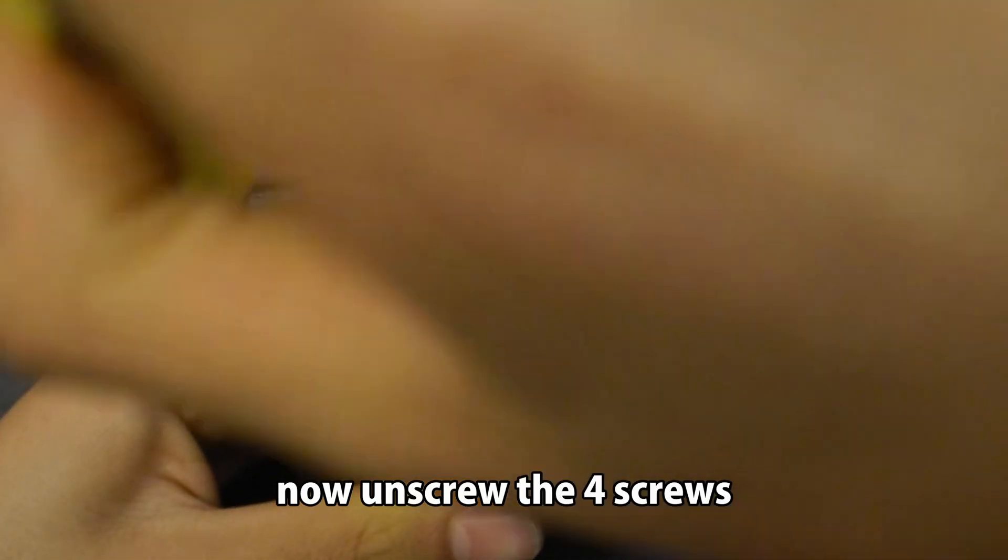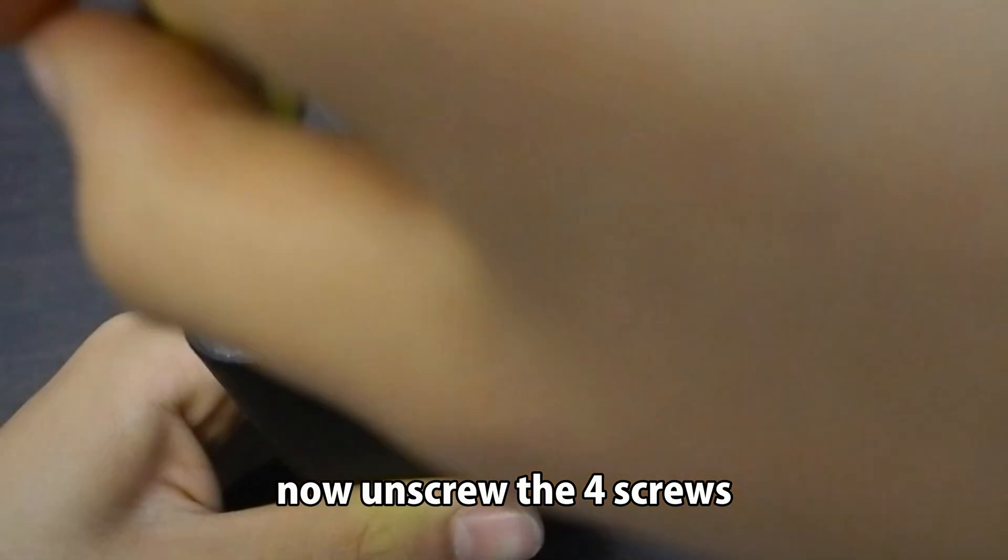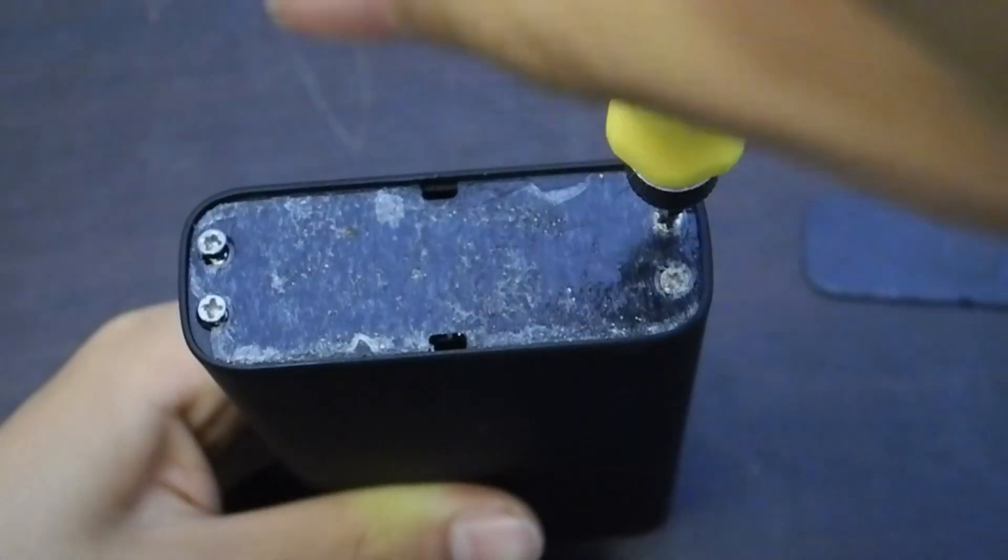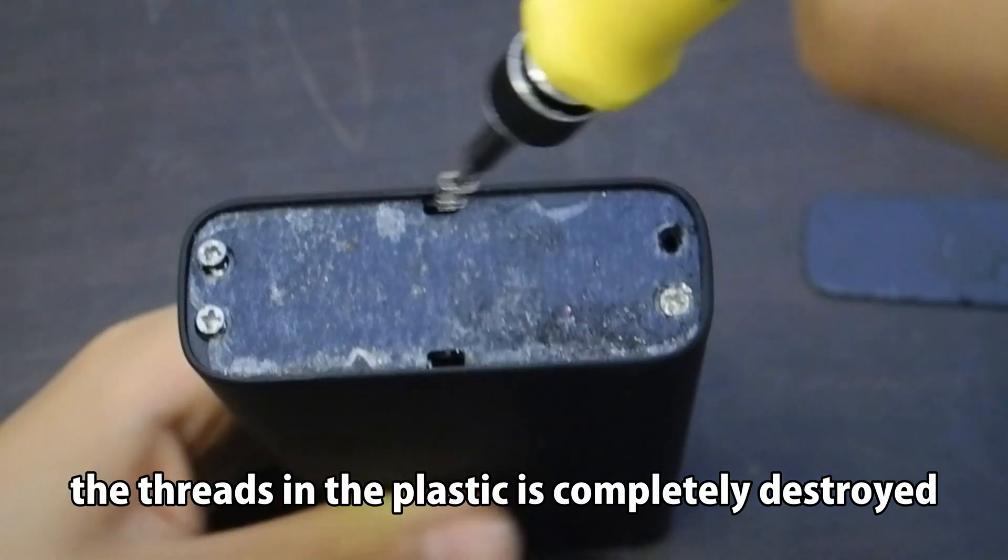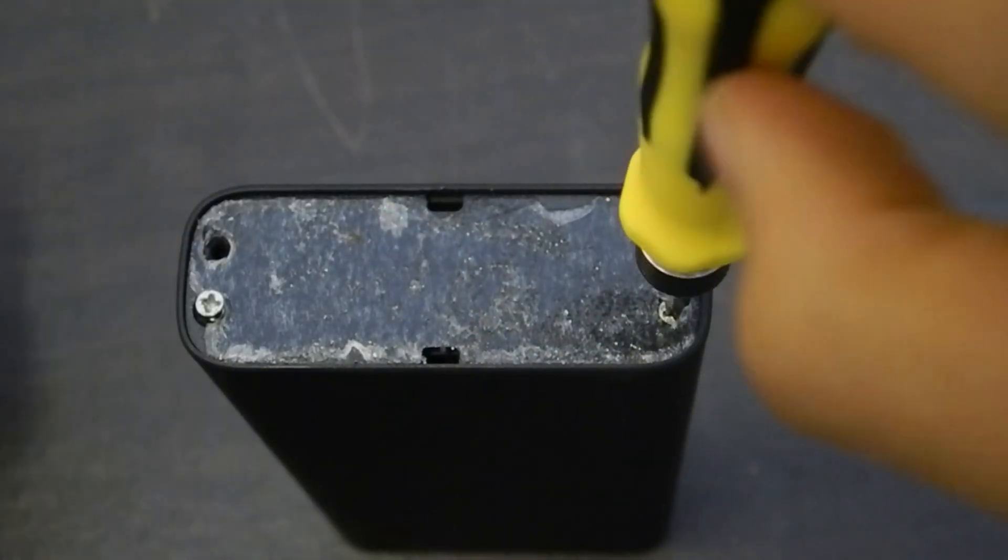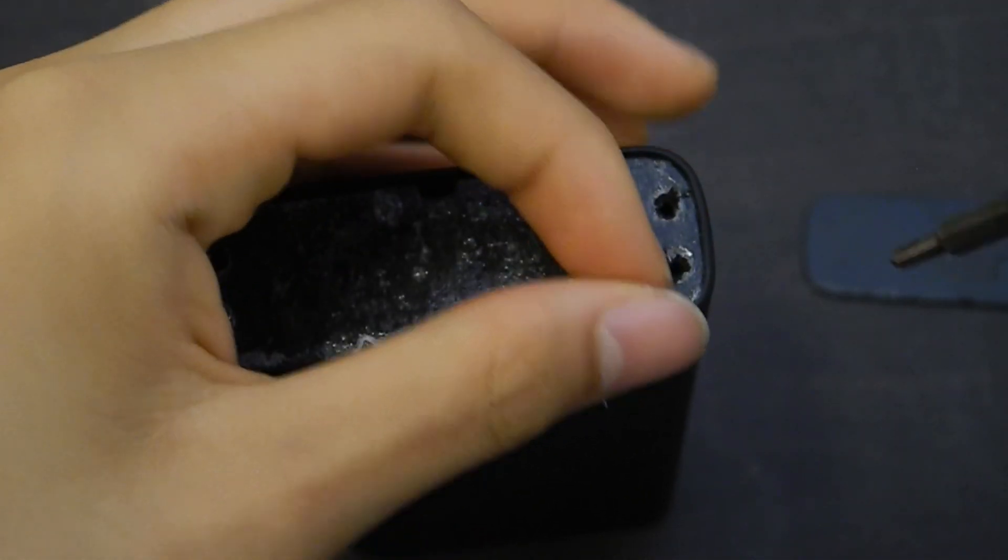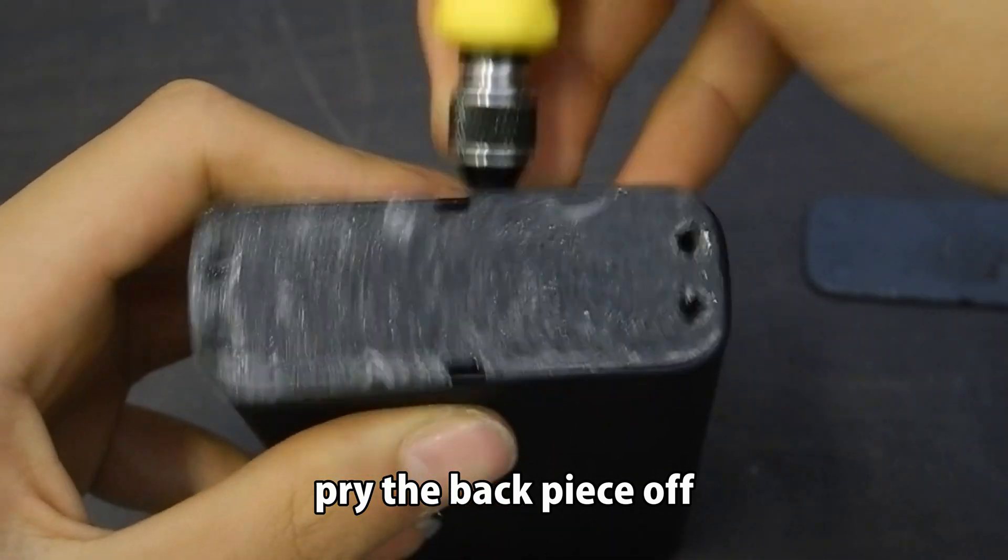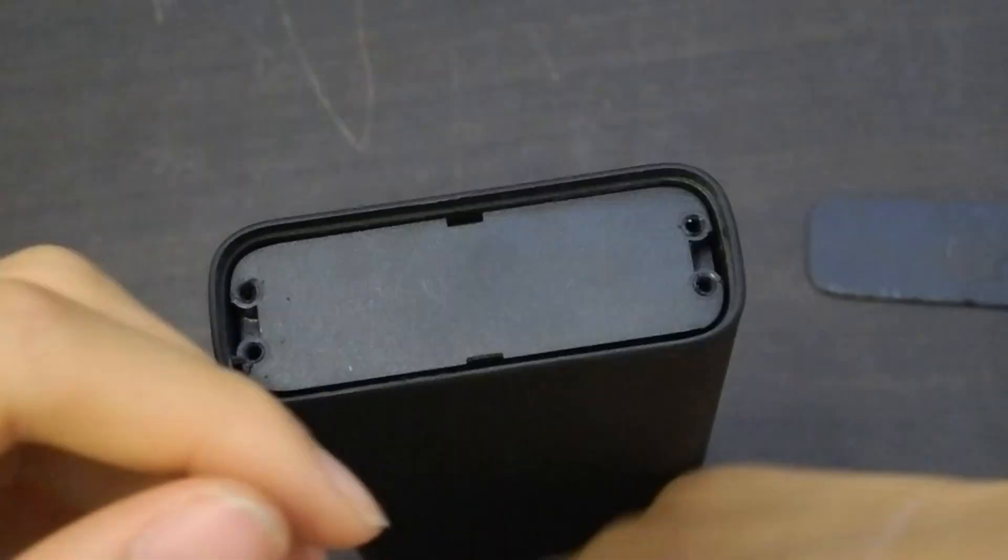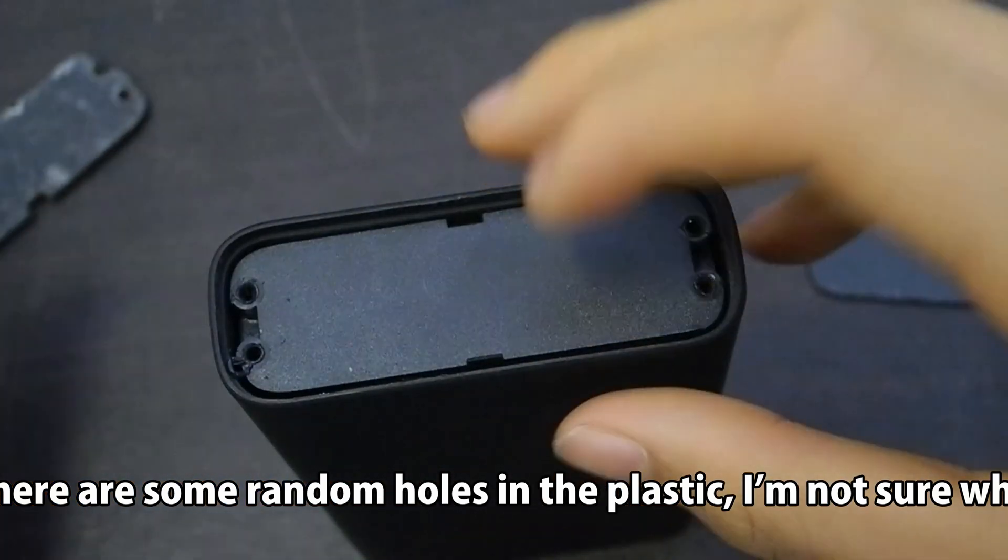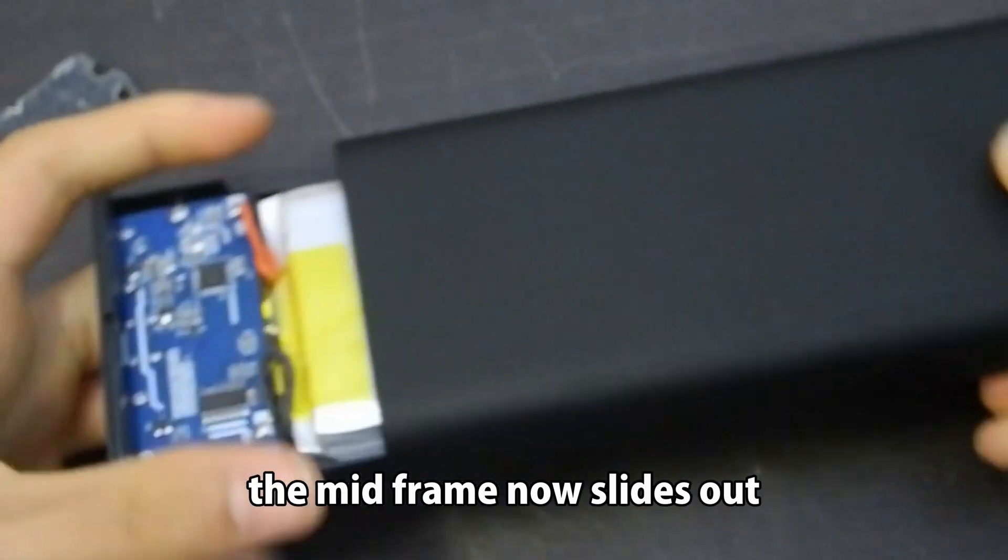Now unscrew the four screws. Some of the screws are actually over tightened. The threads in the plastic are completely destroyed. Pry the back piece off. There are some random holes in the plastic, I'm not sure why.